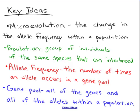There's a lot happening in that definition, so let's unpack some of it. First, what is a population? A population is a group of individuals of the same species that can interbreed. Now we're going to move on to the term allele frequency. The allele frequency is the number of times an allele occurs in a gene pool. An allele is a different version of a gene, so the allele frequency is the percentage of one particular version of a gene showing up in a population.